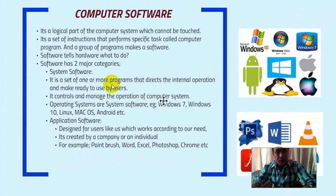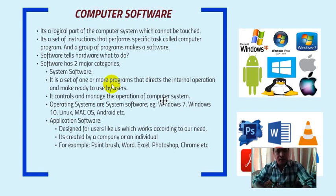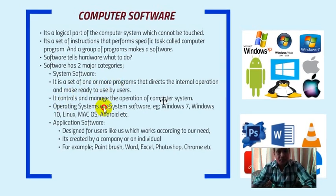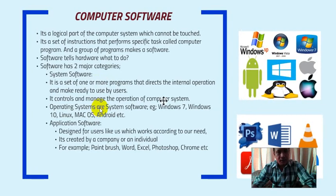When you boot the computer and start it, you wait for the desktop — that desktop is the system software. For example, if your computer has Windows 7, the Windows 7 desktop will appear. Until the desktop comes, you cannot open Microsoft Word or Paint. So when you turn on the computer, the system software is activated first and makes the computer ready to use.